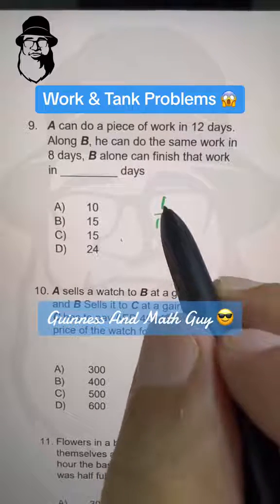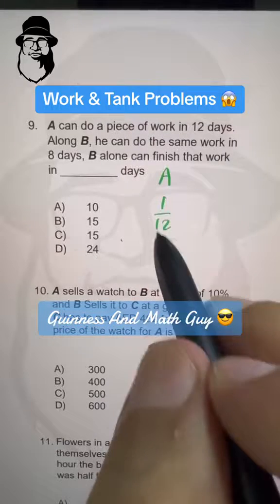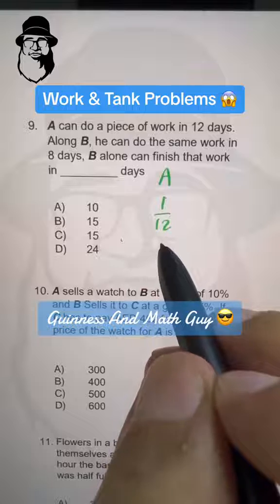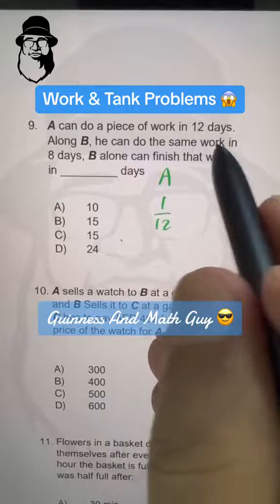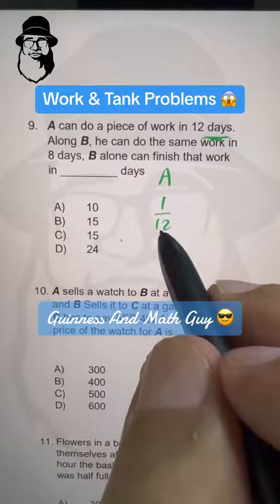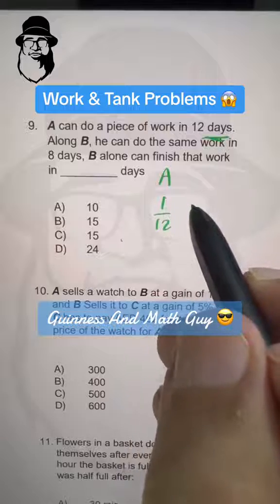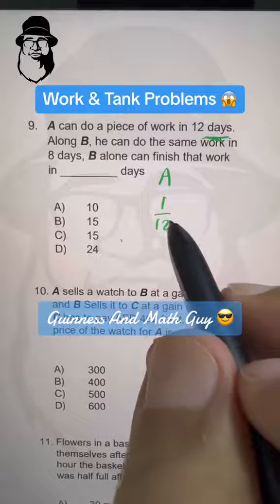This 1 over 12 means every day he completes 1 twelfth of the whole work. That's why when it's multiplied by 12 days, it's complete whole.